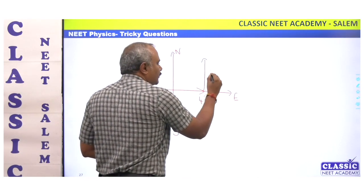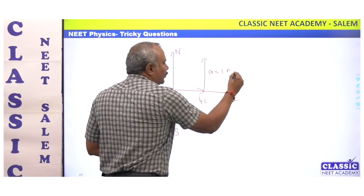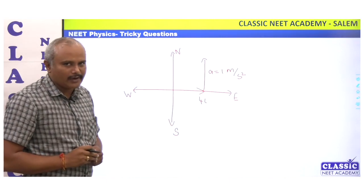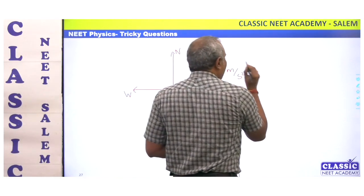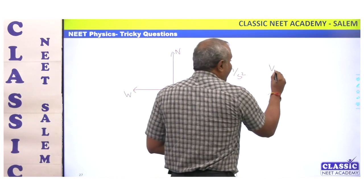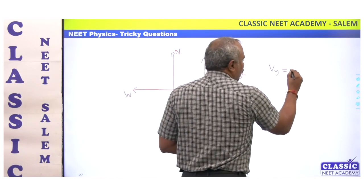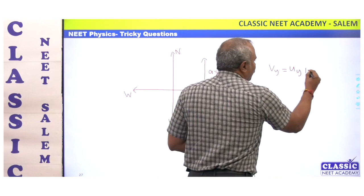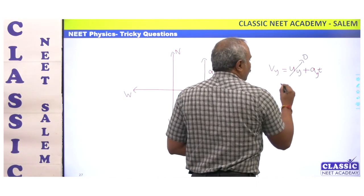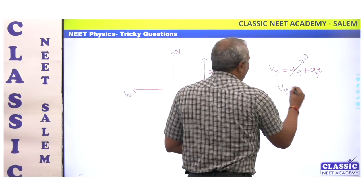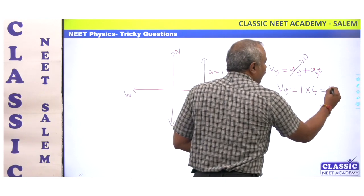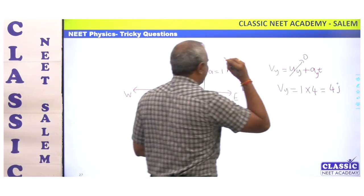Now we have to calculate the velocity. For the y-component, vy equals uy plus ay times t. uy is 0, so ay is 1 into 4 seconds, which gives us 4j.